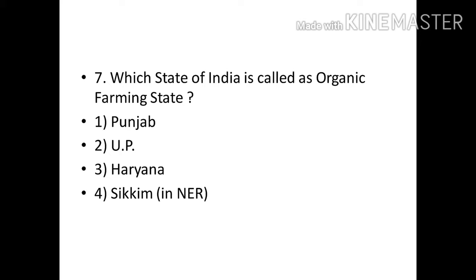Which state of India is called the organic farming state? Options: Punjab, Uttar Pradesh, Haryana, Sikkim. Correct answer: Option D, Sikkim.